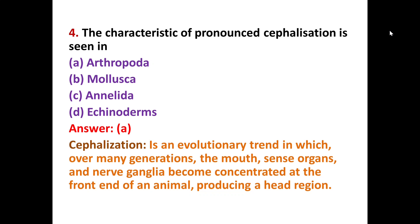MCQ number four asks about which phylum shows pronounced cephalization. The options are a) Arthropoda, b) Mollusca, c) Annelida, and d) Echinoderms. The correct option is A — Arthropoda. Cephalization is an evolutionary trend in which, over many generations, the mouth, sense organs, and nerve ganglia become concentrated at the front end of the animal. In Arthropoda, sense organs, mouth, and ganglia combine to form this cephalized structure.